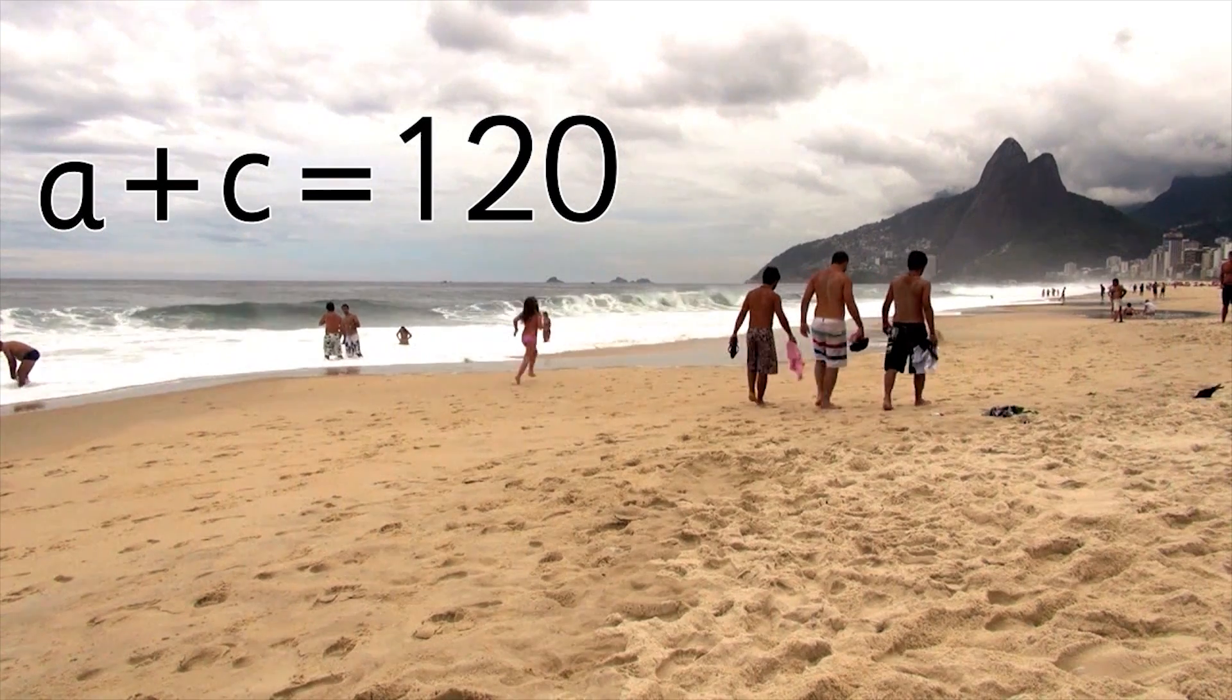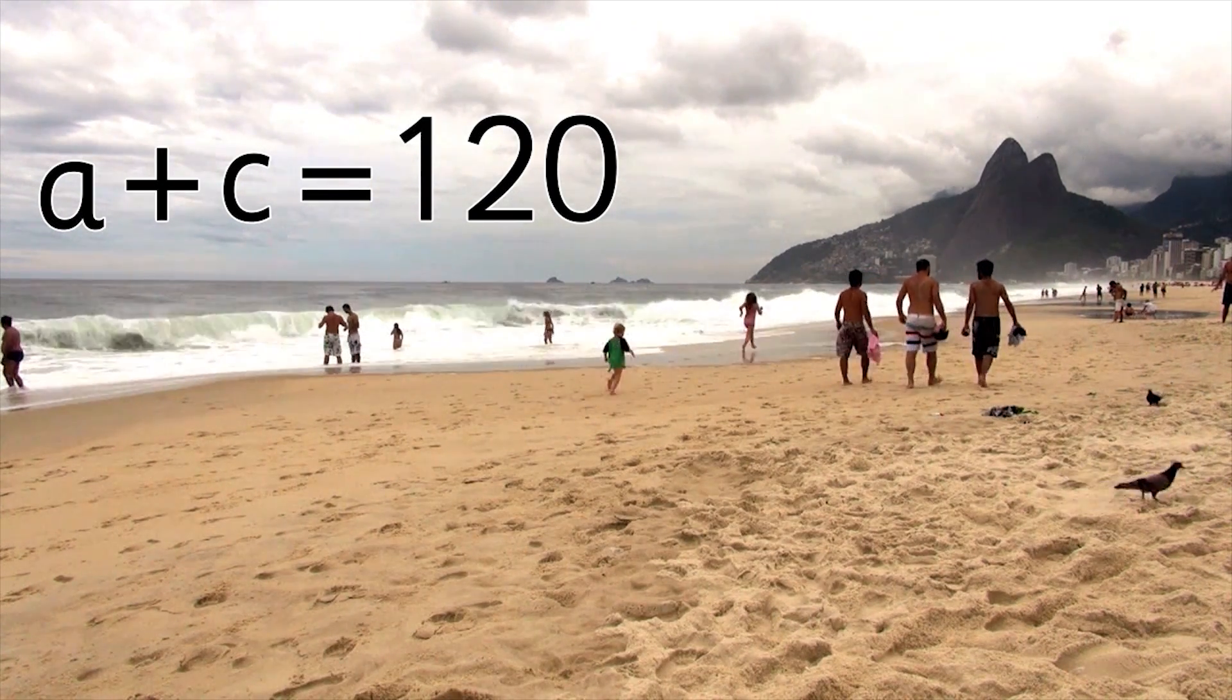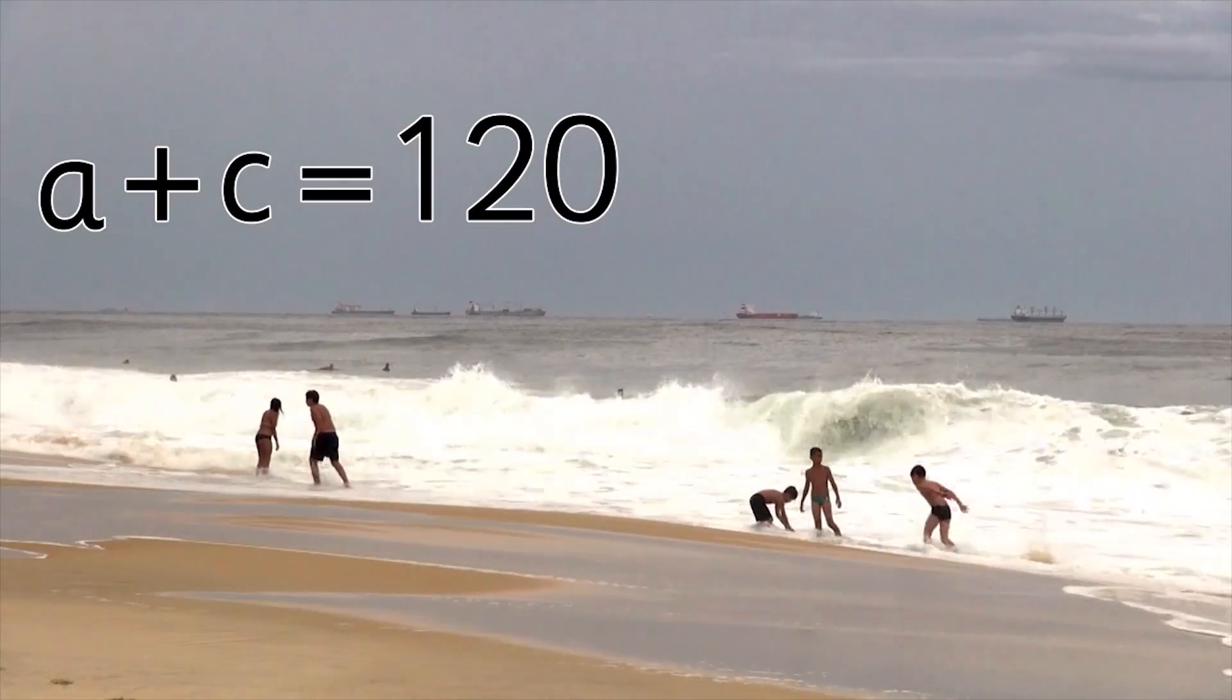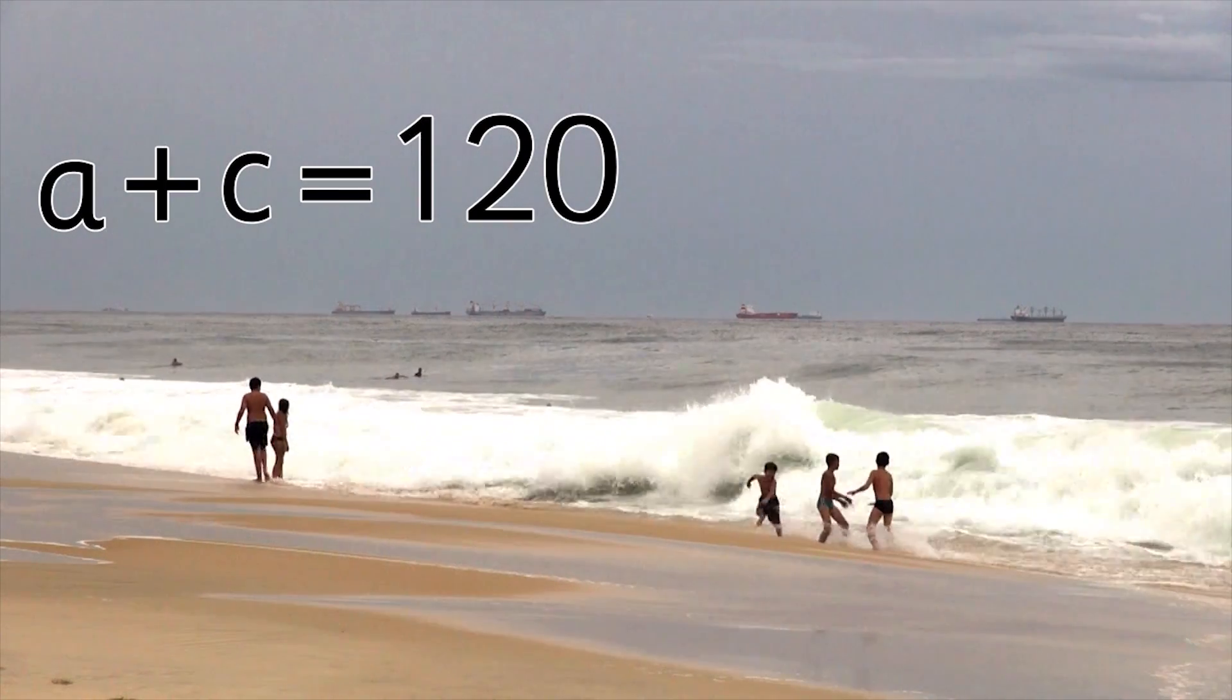We still can't work out what A and C definitely are, because in an equation like this, they can be many numbers. All we know is that together, they make 120.